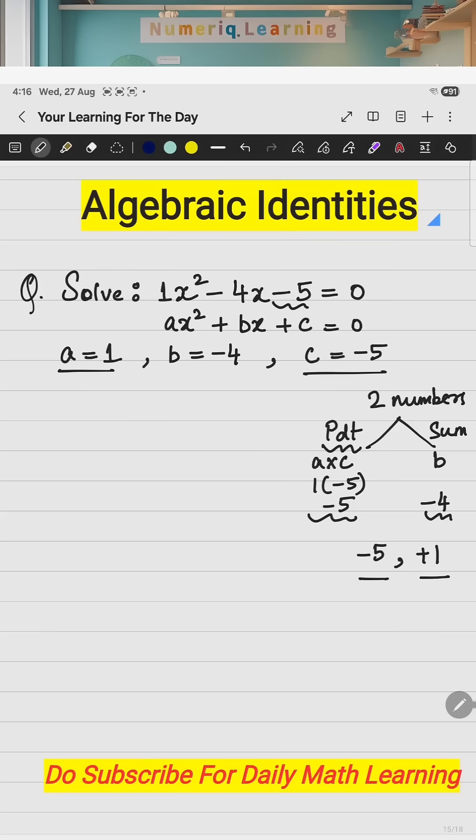Now, these two numbers can be substituted in the middle term. Which is the middle term here? This is the middle term. So, let's rewrite it. The equation: x² - instead of minus 4x, the middle term, I will split it and write using these two factors. That is minus 5x plus x. And the remaining third term is minus 5 equal to 0.